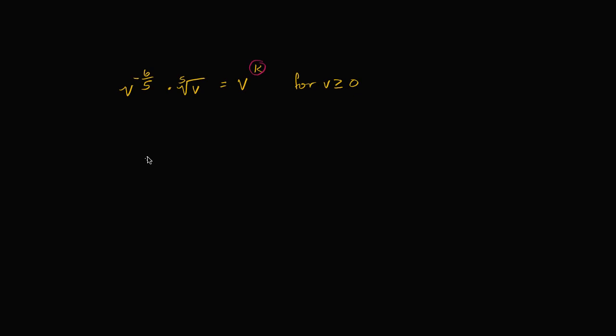All right, let's work this out together. So the first thing I'd want to do is be a little bit consistent in how I write my exponent. So here I've written it as negative 6 fifths power. And here I've written it as a fifth root.